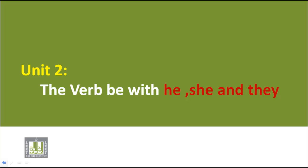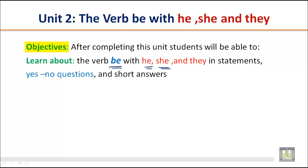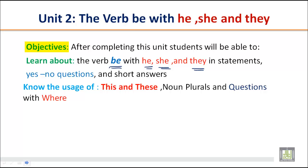Bismillahirrahmanirrahim. Unit 2: the verb 'be' with he, she, and they. In this unit we will study about the form of verb 'be' with he, she, and they in simple present. After completing this unit you will be able to learn about the verb 'be' with he, she, and they in statements, yes/no questions, and short answers. You will also know the usage of 'this' and 'these', noun plurals, and questions with 'where'.